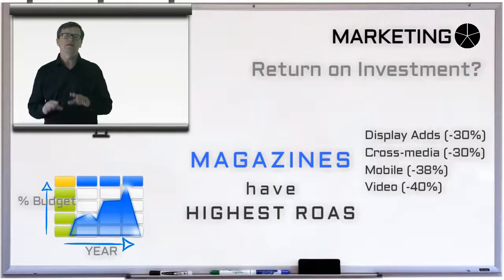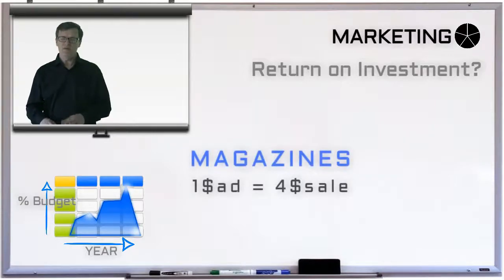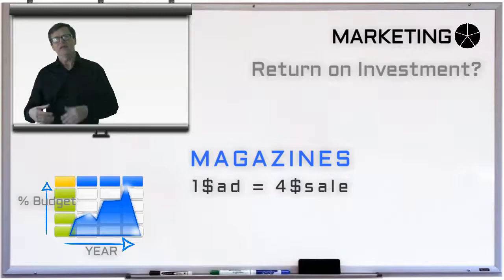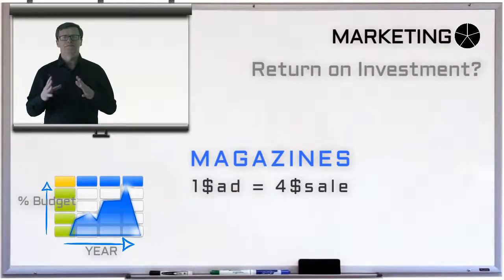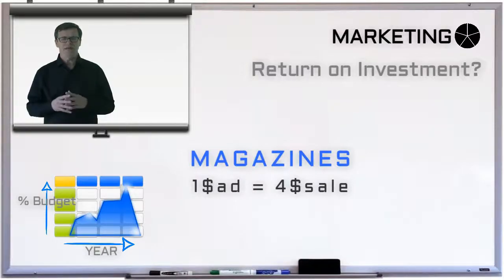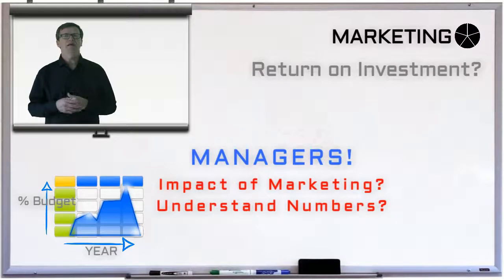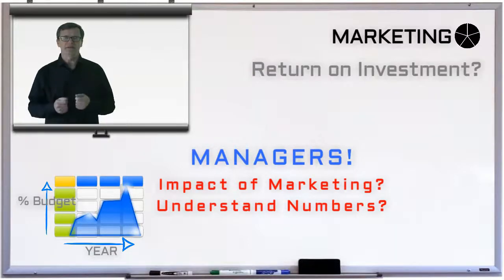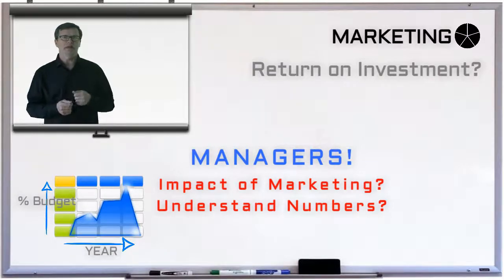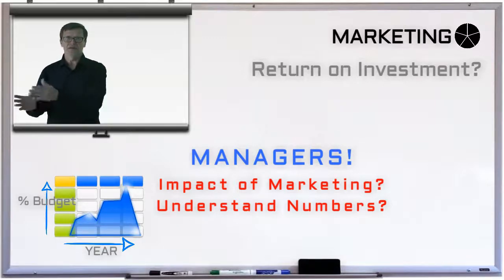So magazines are number one on return on advertising spend. What this means in practical terms is that for every $1 spent on magazine advertising, advertisers estimate that something like $3.94 is achieved in sales. This data tells us that marketing managers need to figure out and better understand the benefits of marketing, and they must begin to understand the numbers. They must also make sure their creative output is the best it can be if they wish to drive sales in digital channels.